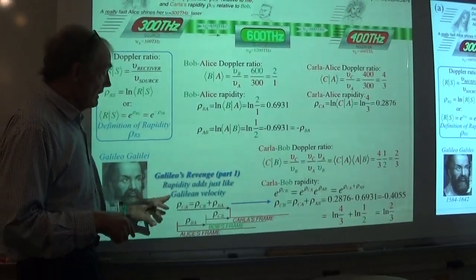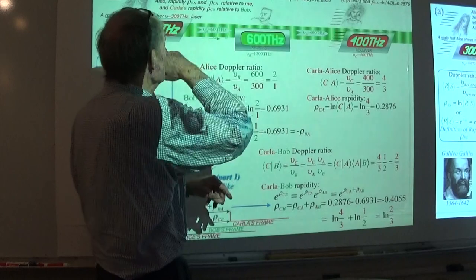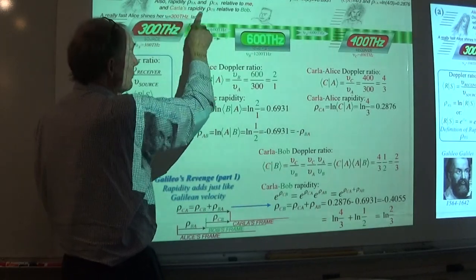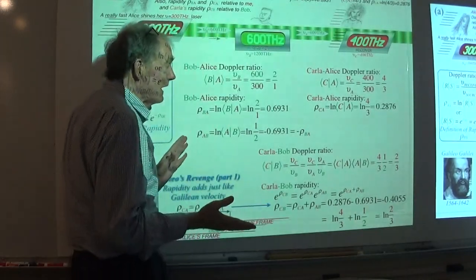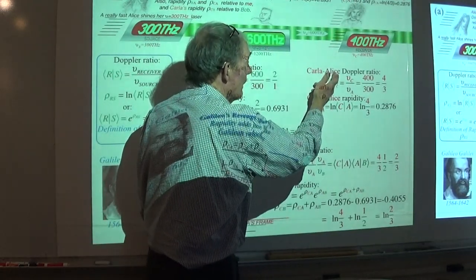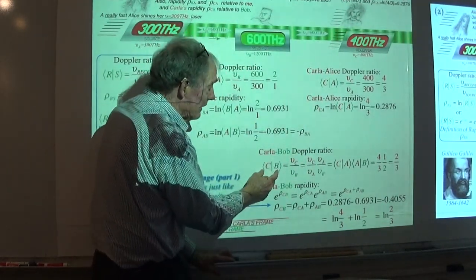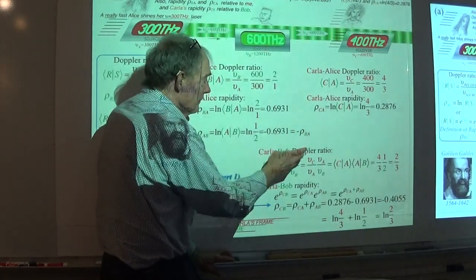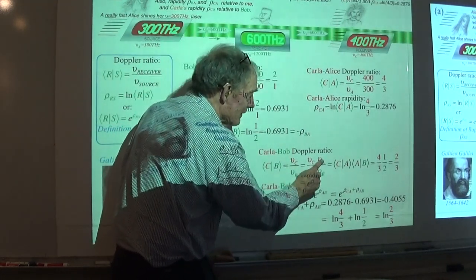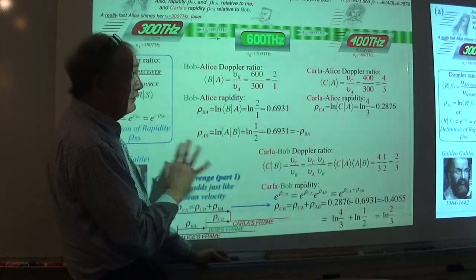Rapidity adds just like Galilean velocity because if I'm answering the question here of what we really are asking here is Carla's rapidity relative to Bob. How do you get that? Or in this case, I'm talking about Alice-Carla Doppler ratio. Well, here's how I use that to get Bob-Carla Doppler ratio. I just say, okay, I've got Carla over Bob. Let me just stick in Alice off the diagonal.